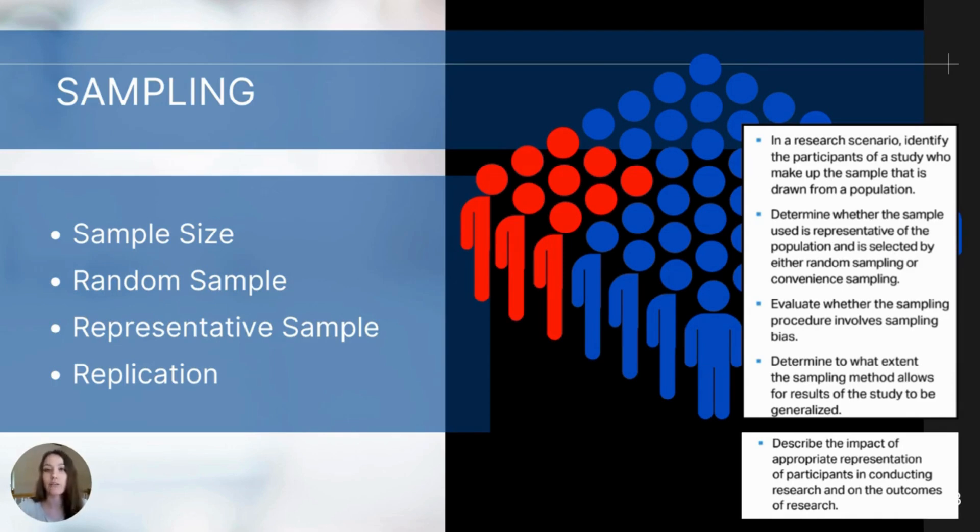The second thing is random sampling. Using random sampling methods ensures that every member of the population has an equal chance of being selected, and that can help us avoid a selection or sampling bias. And if you decide to use a convenient sample, you run the risk of possibly selecting an unrepresentative sample. A representative sample is a sample that reflects the diversity of characteristics in the population, things like age, gender, ethnicity, socioeconomic status, or any other relevant characteristics. And then lastly, replication should be something you're also looking at and thinking about in regarding a sample. If the study has been replicated with different samples and different settings, this can provide evidence that it is more reliable or generalizable.